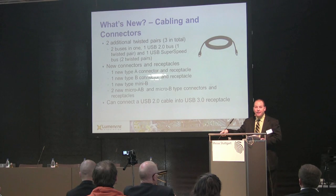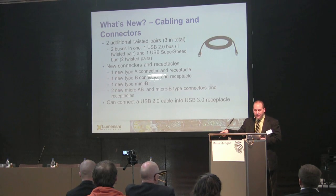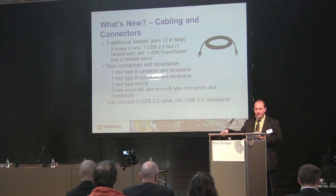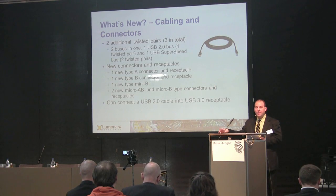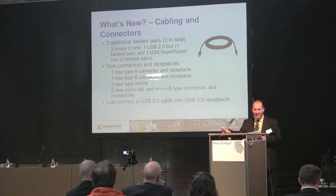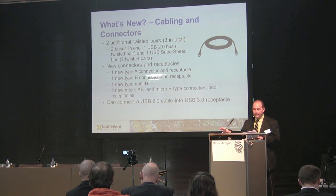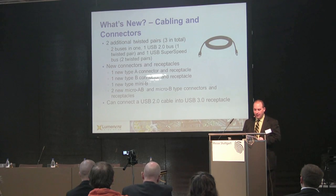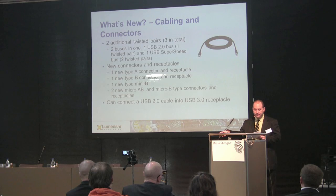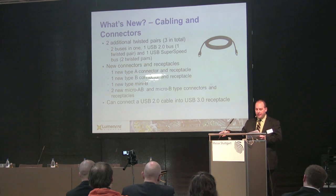In essence, these new cables are like having two buses, where one twisted pair provides USB 2.0 signaling and the other two provide USB 3.0 signaling. As a result, the connectors also needed to change to support these additional cables. Five new connectors and mating receptacles were created: one new type A, one new type B, one new type mini B, and two micro B and AB connectors. The micro AB receptacles can act as either downstream ports like a USB device or upstream ports like a host PC.